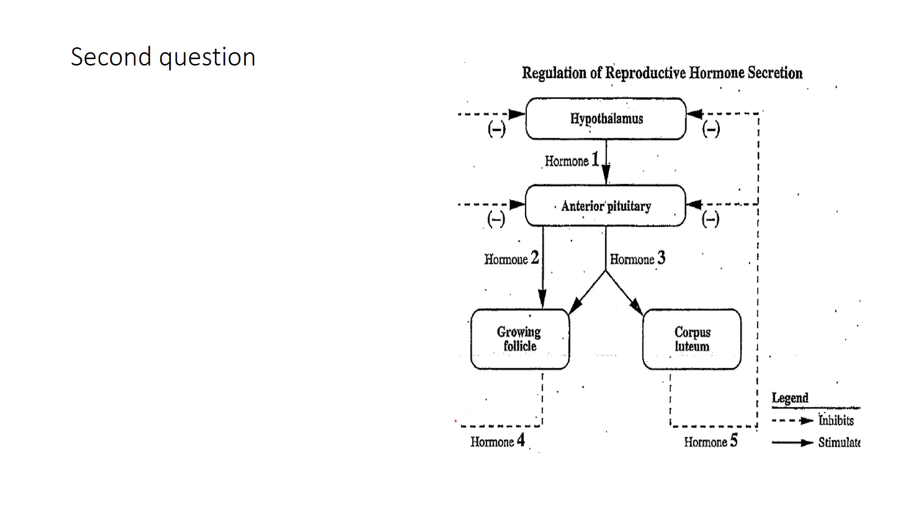For some reason this dotted line got cut off so I'm just going to fill that dotted line up. What they're showing you is on this diagram the dotted lines inhibit, the full line stimulates. Let's look at this second question. According to the diagram, secretions of hormone one.